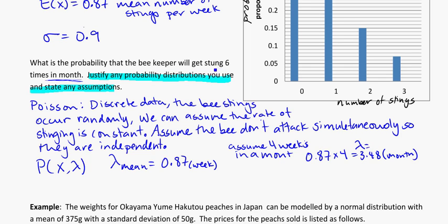And here, we're looking at beekeeper will get stung six times. So that's just a precise thing. It's just six, nothing else. So into my calculator, I can put in P, using P precise, 6 comma 3.48. And if we do that, we should get 0.07599.